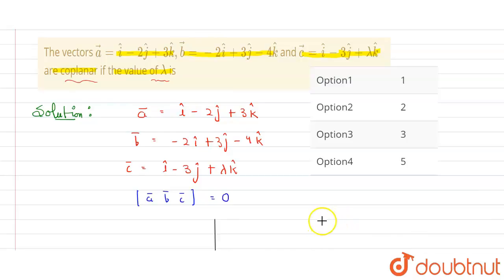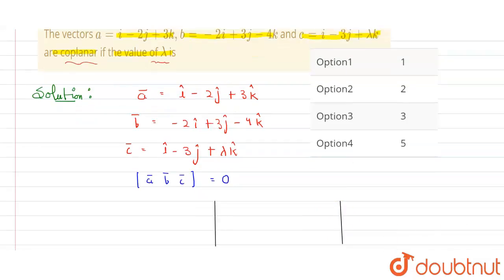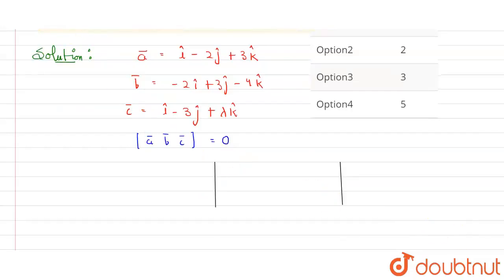So let's find the value of their determinant. First we will draw like this, the way we do for determinant. Now put the values here—values of vectors a, b, c. The coefficient of i is one, for vector b it is minus two, and for c it is one.